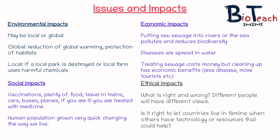Moving on to social impacts — lots of implications in the articles you're given will be social. For example, vaccinations have a social implication, having plenty of food in an area has positive social implications, and the ability to travel in and out of the country also has a social impact. That also has economic impacts because as we travel to other countries we are helping their economy — so you get an idea of how to link these implications together.